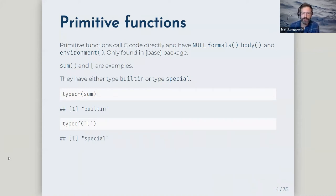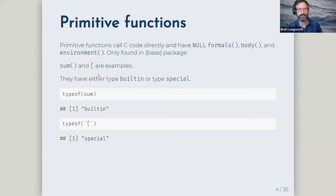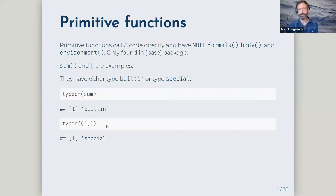If you try to call the formals on a primitive function you won't get anything back, or you might get an error. Things like sum and the subset operator are examples of primitive functions. Using backticks around a special function name lets you do things with it that you wouldn't otherwise be able to — like getting help on it.